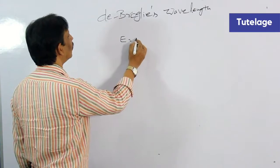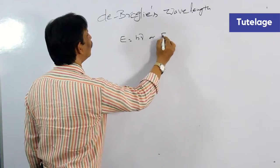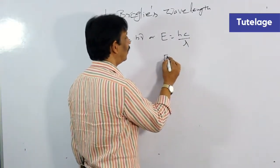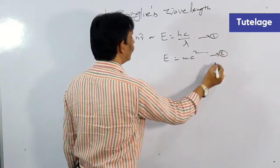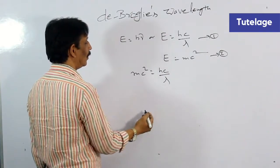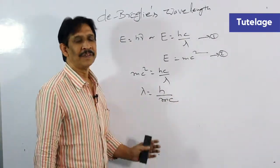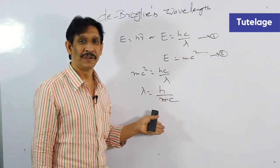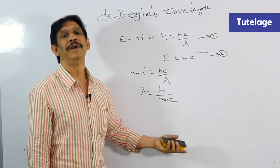As we know, the energy of a photon is hν, or E is equal to hc by lambda. According to the Einstein mass-energy relation, E is equal to mc squared. When you equate these two, mc squared is equal to hc by lambda, so lambda is equal to h by mc. This lambda is known as the De Broglie wavelength, where h is Planck's constant, m is the mass of the photon, and c is the speed of light.